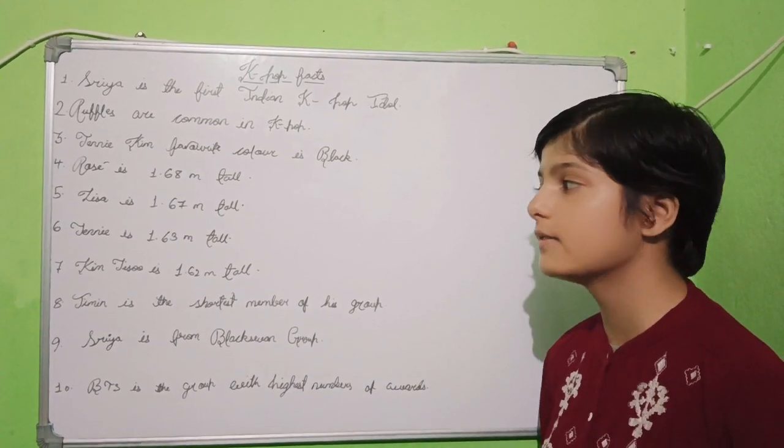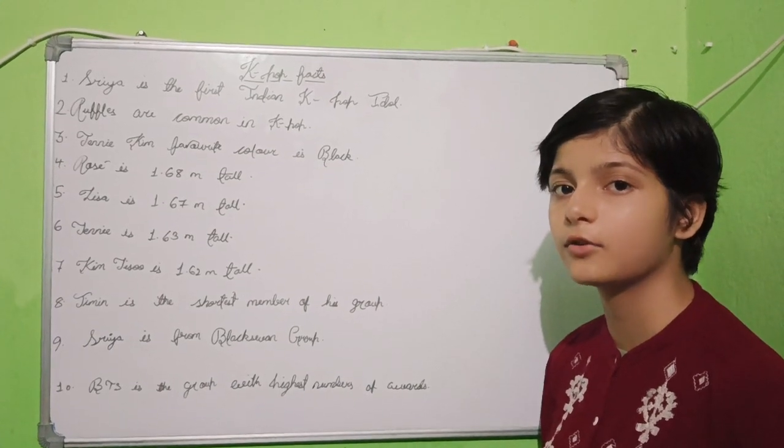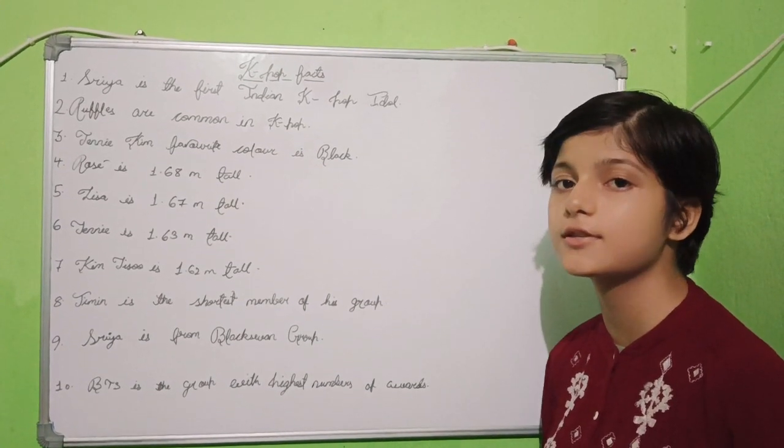Number 7: Kim Jisoo is the shortest member of the group Blackpink. Her height is 1.62 meters tall.